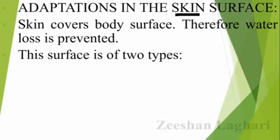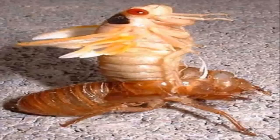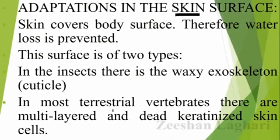In insects living in the terrestrial environment, the land habitat, there will be an exoskeleton made of wax. The exoskeleton is a wax layer. Here we can see an insect through which the old exoskeleton is shedding. This old exoskeleton has a wax layer, and by this wax covering, water in the body does not evaporate into the environment.